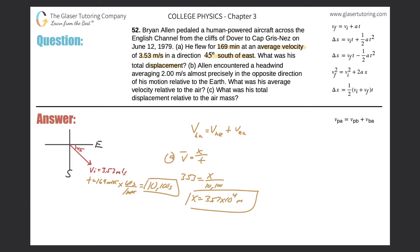Alan encountered a headwind averaging two meters per second, almost precisely in the opposite direction of his motion relative to the earth. What was his average velocity relative to the air? So basically what's happening is, in terms of the picture here, Alan is experiencing a headwind or a wind that is opposing his motion, and that wind is moving at 2.00 meters per second. So this is 2.00 meters per second.